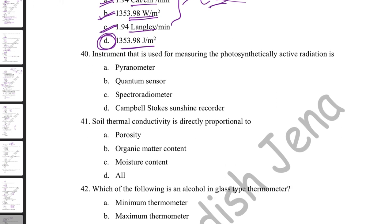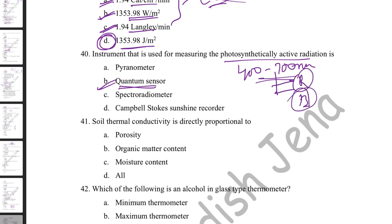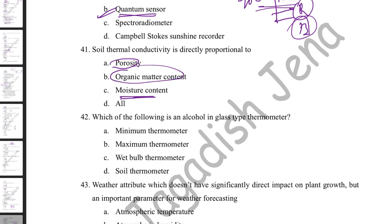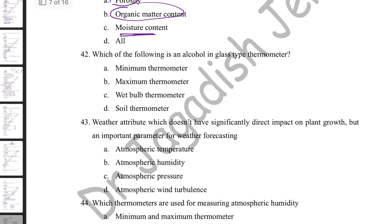The instrument used to measure photosynthetically active radiation (PAR) is called a quantum sensor. PAR corresponds to wavelengths of 400–700 nm, with red and blue bands being most potent for photosynthesis. Soil thermal conductivity is directly proportional to moisture content and inversely proportional to porosity, organic matter content, and clay content.